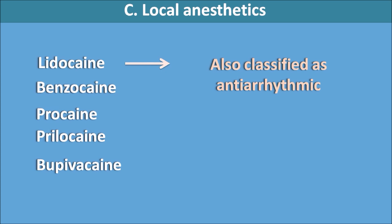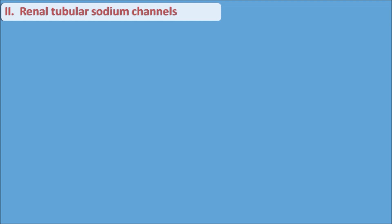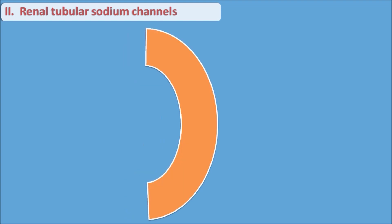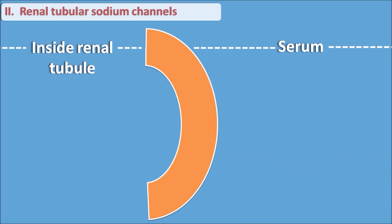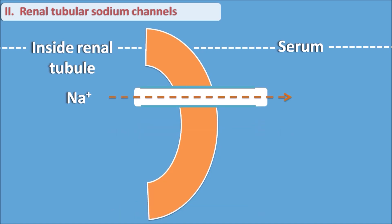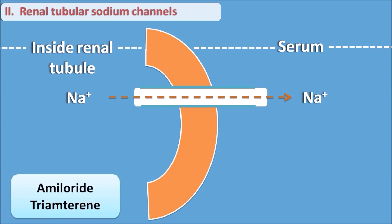These are the various drug targets acting on voltage-gated sodium channels. Now let us go to the renal tubular sodium channels and how drugs act on these. Within the renal tubule, sodium cannot cross passively through the renal tubules; it is absorbed into the serum by specialized channels called renal tubular sodium channels. Drugs like amiloride and triamterene directly block these renal tubular sodium channels, inhibiting sodium reabsorption and thereby increasing sodium excretion.